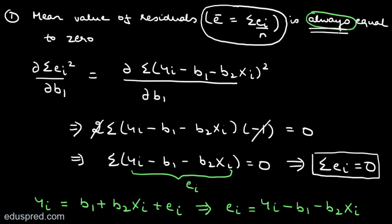This will always happen in your regression if you are using the method of ordinary least squares and if you have an intercept term in the model. In other words, the method of OLS is constructed in such a way that we always get summation ei equal to zero, or equivalently the mean value of residuals equal to zero — by construction of the method of OLS.